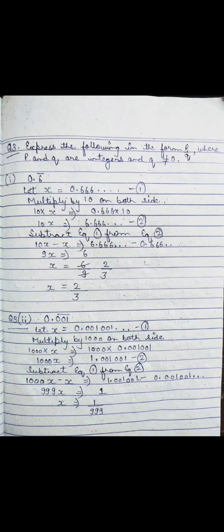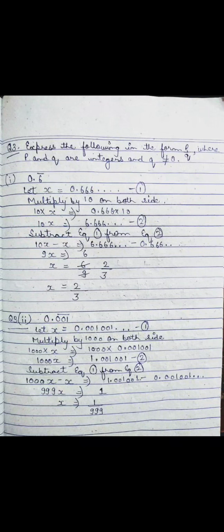Now multiply by 10 on both sides. The reason we multiply by 10 is that only one digit has the bar. If 2 digits had the bar, we'd multiply by 100; if 3 digits, by 1000. Since here only 1 digit (6) is repeating, we multiply both sides by 10.